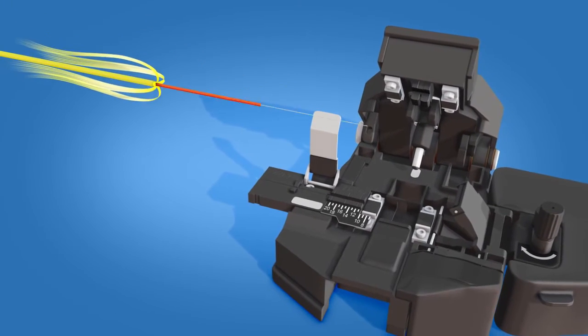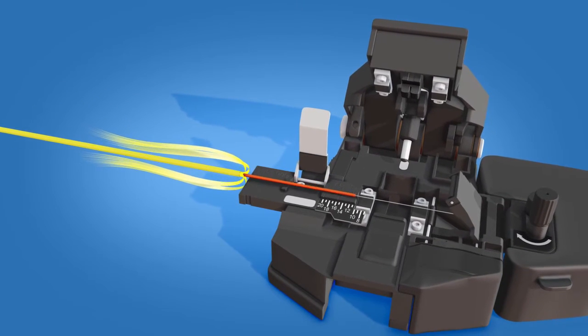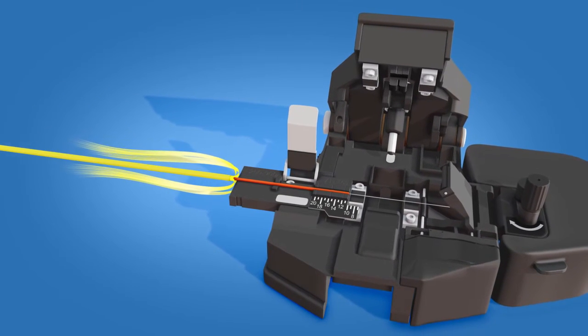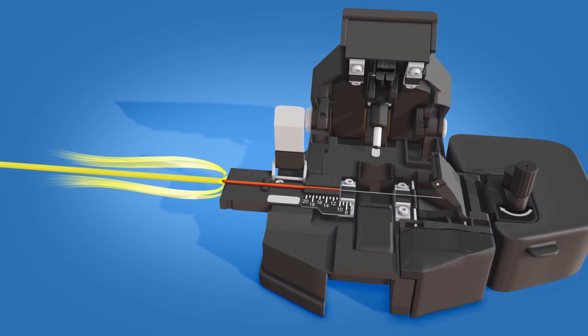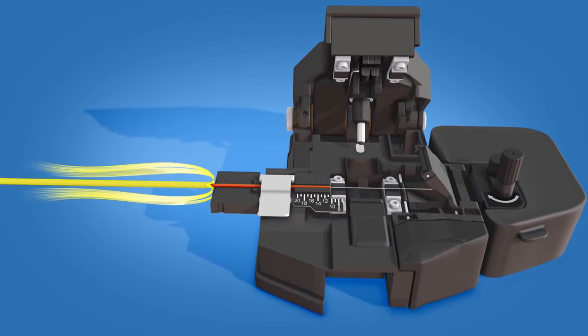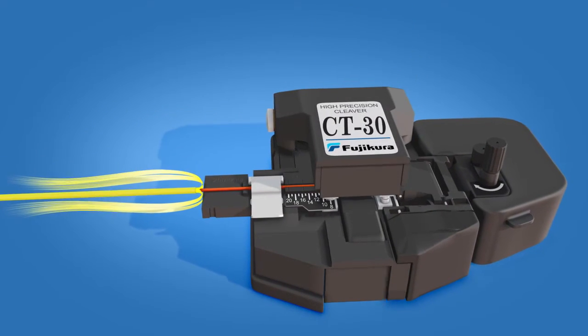Place the fiber into the CT30 cleaver at the 10.5 mm cleave length. Close the clamp. Push the cutting lever downward to cleave the fiber.